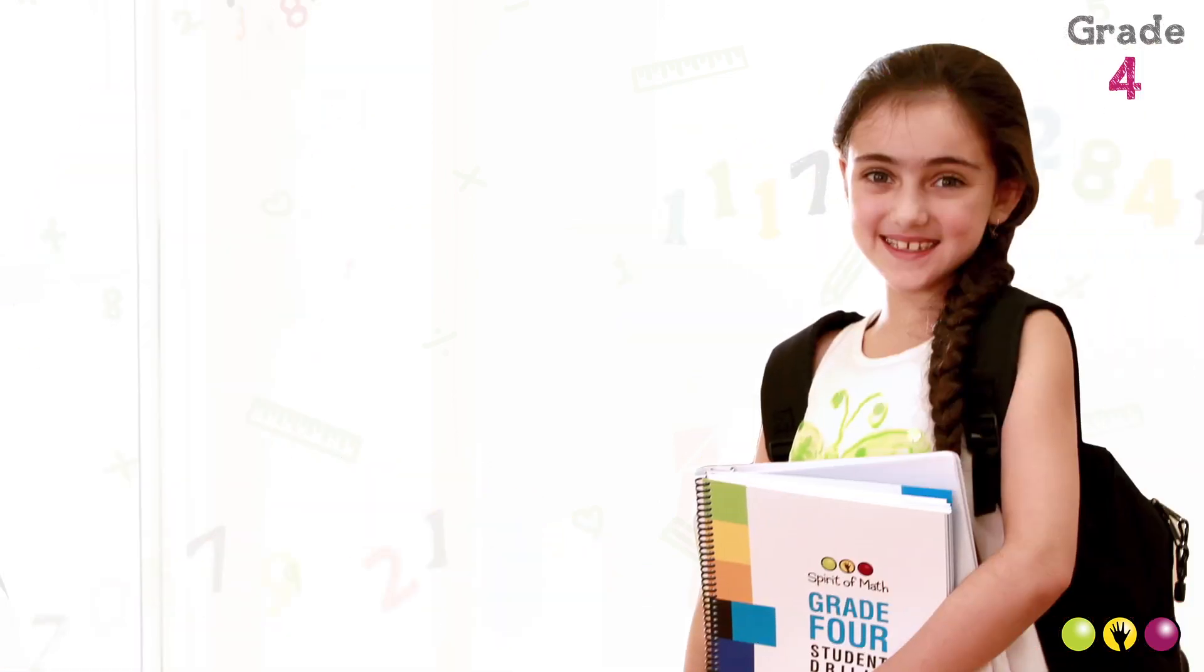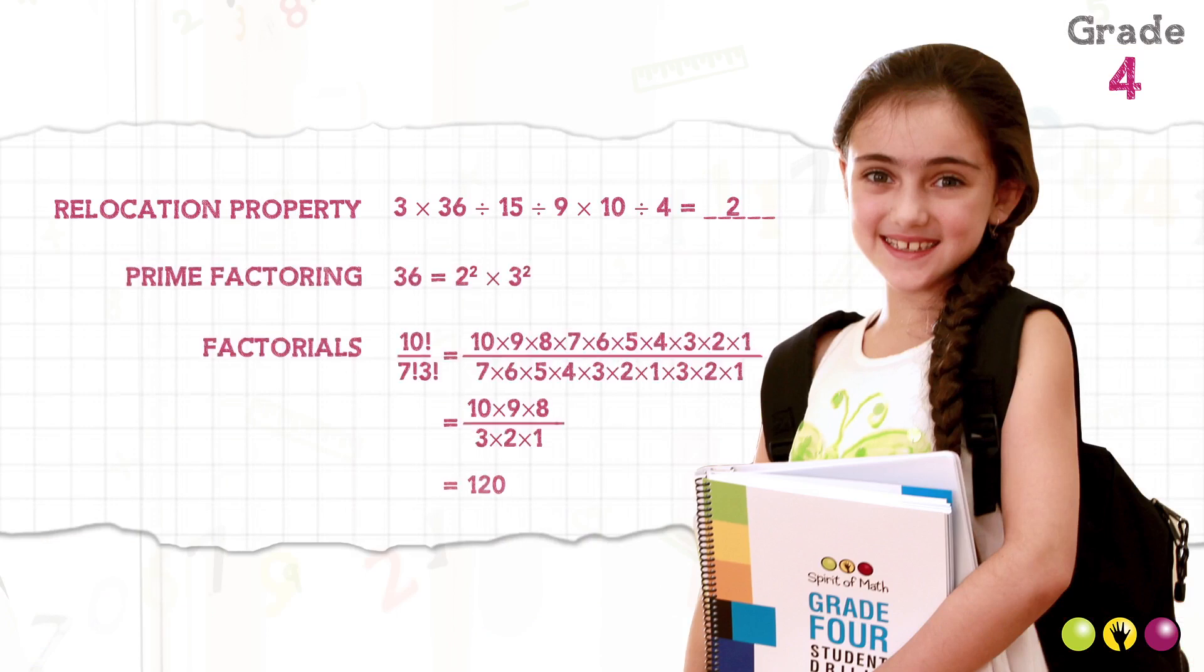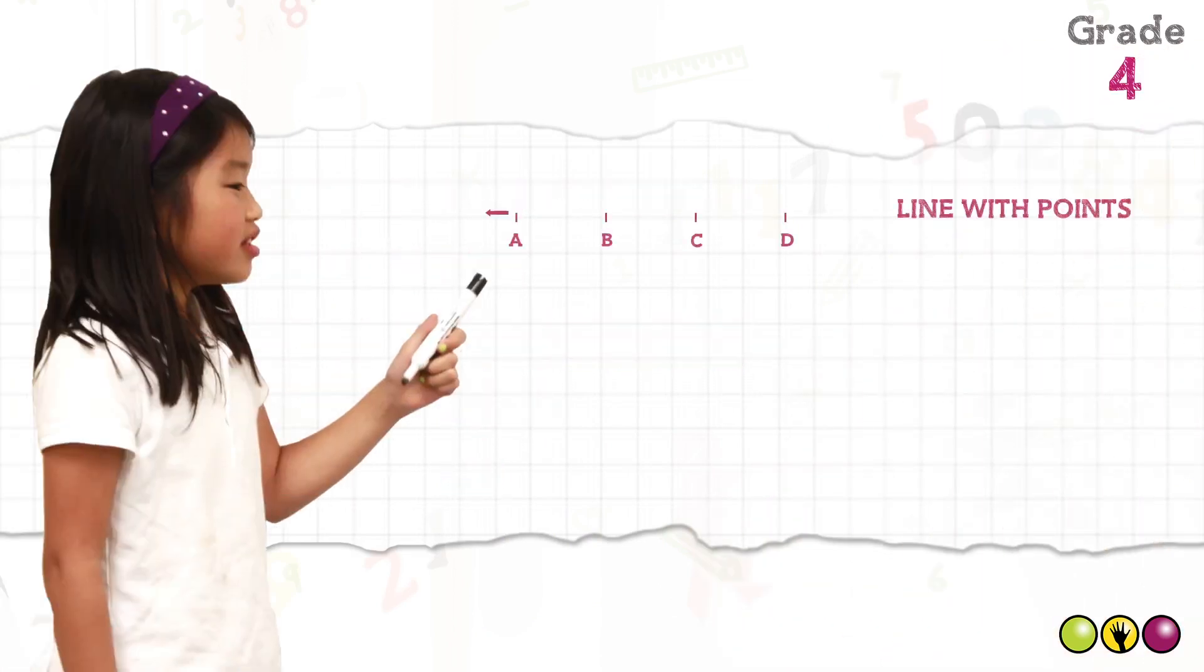By grade four they are experts in the relocation property. They can apply concepts like prime factoring and factorials to a variety of problem-solving scenarios and they understand topics in geometry including points, lines, angles, and polygons.